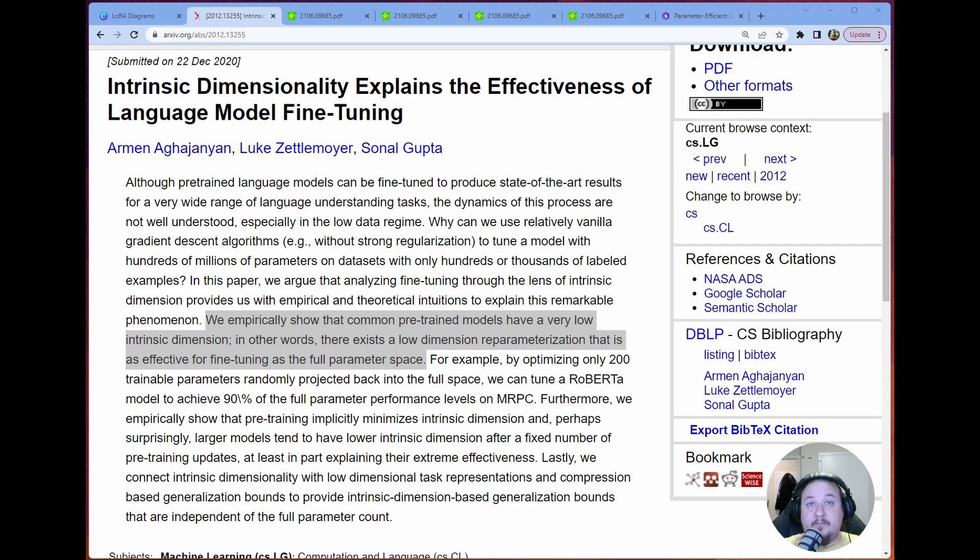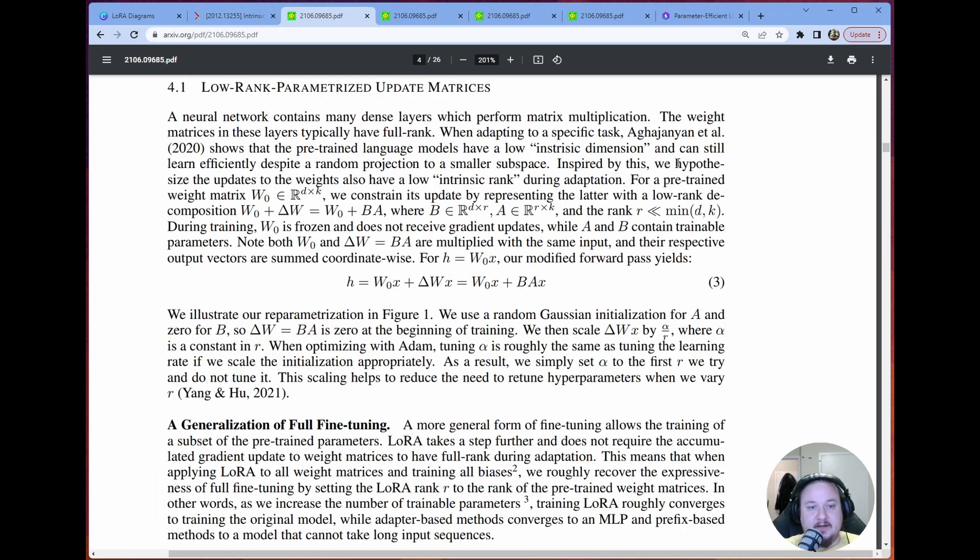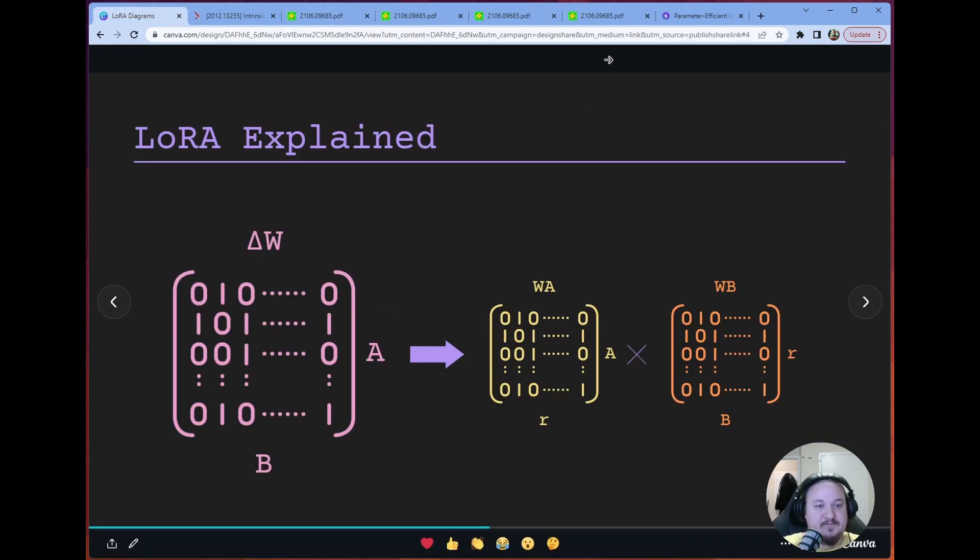So what essentially that means is that they can be described as accurately or almost as accurately using way fewer dimensions than they have. So instead of needing say a full 100 dimensions, maybe we could get away with having 90 dimensions. So that's all it's saying. There's a lot of redundancy. There's a lot of extras, a lot of just stuff hanging out that we can kind of get rid of.